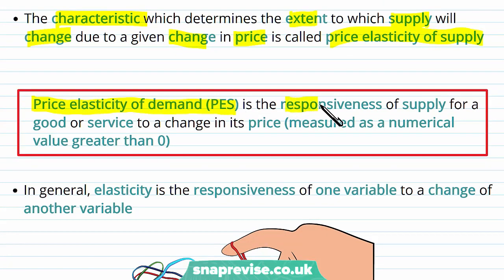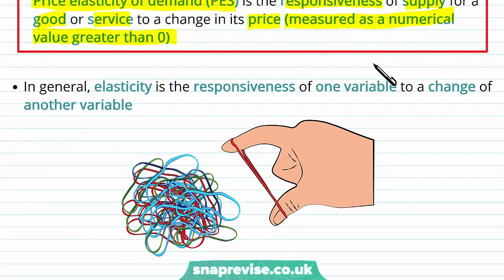PES is the responsiveness of supply for a good or service to a change in its price measured as a numerical value greater than zero. So in general, when we're talking about the elasticity of something, we're talking about the responsiveness of one variable to a change of another variable.